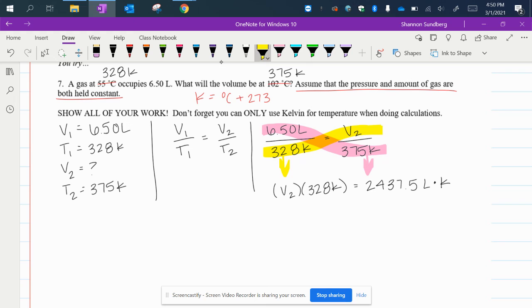I still want to get V2 by itself. So I have to divide each side by 328 Kelvin.